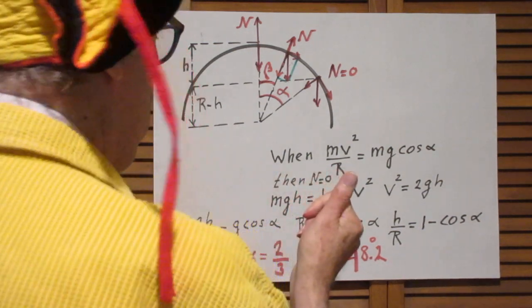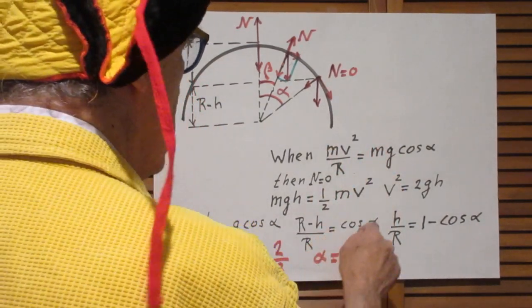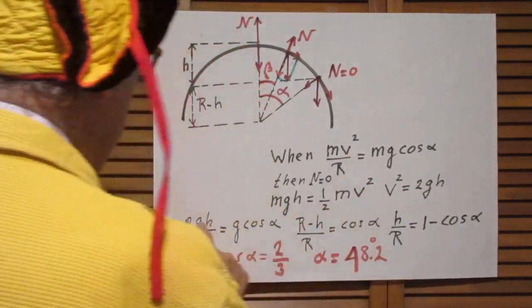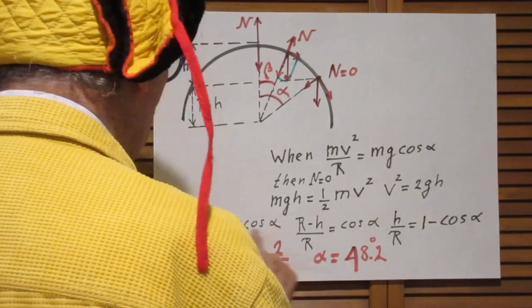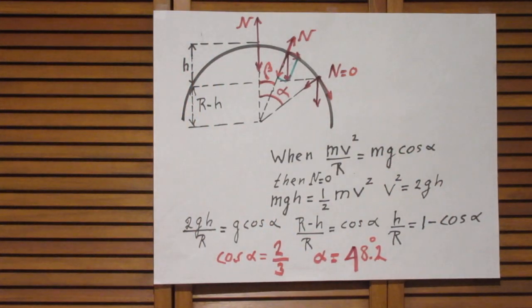So now we go back to this equation. Again, it's independent of m. So I substitute in here 2gh. Then I get 2gh divided by capital R is g cos alpha. That is when the person loses contact with the dome.